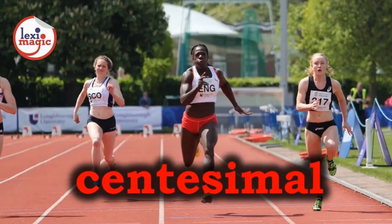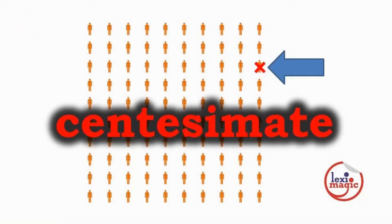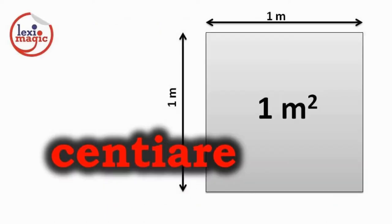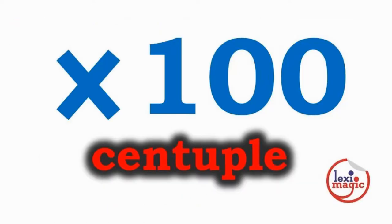Centesimal is related to one hundredth of something. Centesimate is to select every hundredth person for punishment. Centiare is an area equal to one square meter. Centuple means to multiply something by hundred, hundredfold.